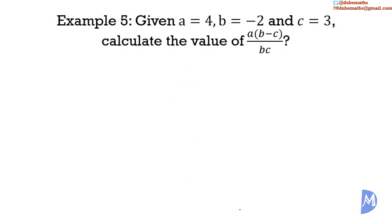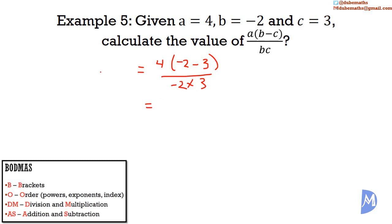The fifth and final example. Given a is equal to 4, b is equal to negative 2, and c is equal to 3, calculate the value of a multiplied by b minus c, all over bc. So we get 4 multiplied by b, negative 2, minus c which is 3, all over b, negative 2, multiplied by 3. With BODMAS, we resolve the brackets first: we have 4 multiplied by negative 2 subtract 3, which is negative 5.